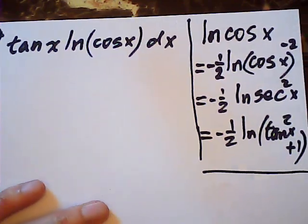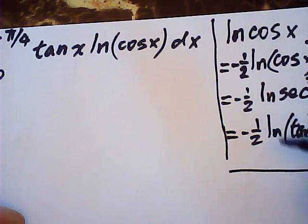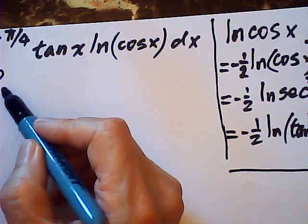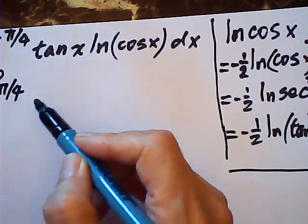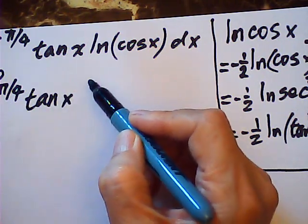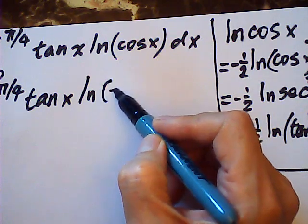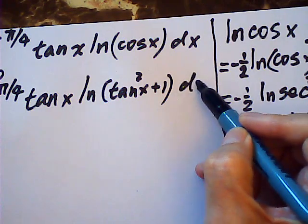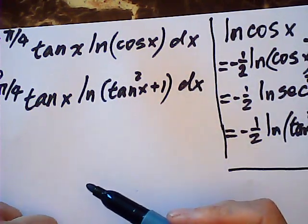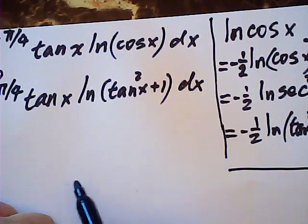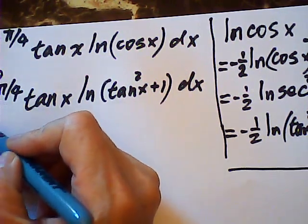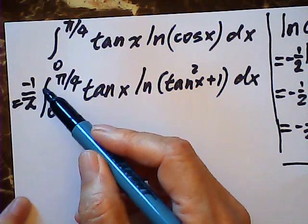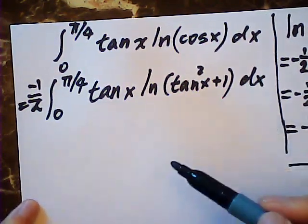That is what I want to say. So this integral becomes the integral from zero to π/4 of tangent x times log(tan² x + 1) dx, with a factor of negative one half outside the integral.